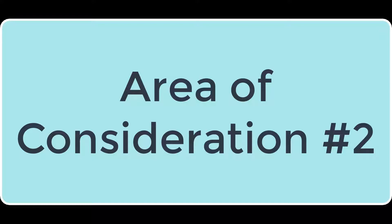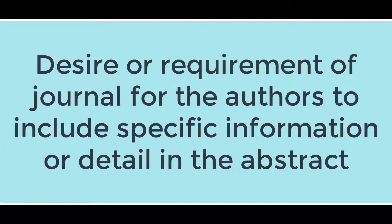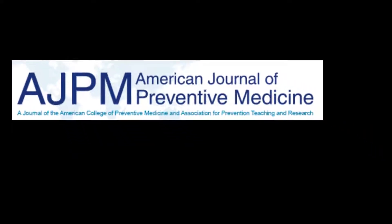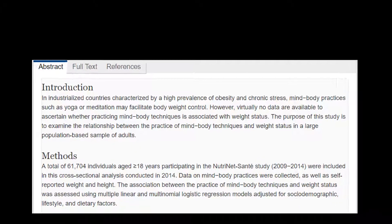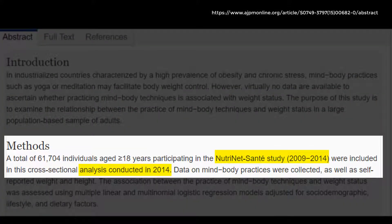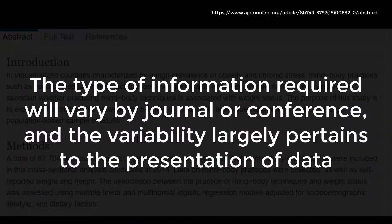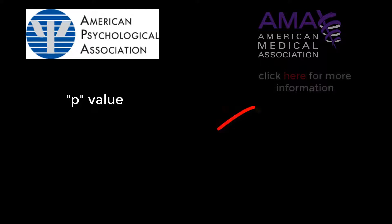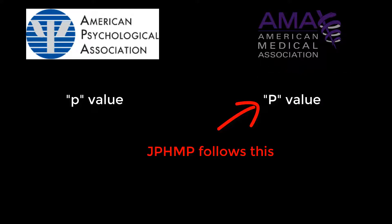The second area of consideration is the desire or requirement of a journal for the authors to include specific information or detail in the abstract. For example, the American Journal of Preventive Medicine requires that the abstract include the date of data collection and analysis. The type of information required will vary by journal or conference, and much of the variability pertains to the presentation of data. For example, the American Psychological Association and the American Medical Association are the two most commonly used formats by public health journals, and are specific about presentation of p-values.